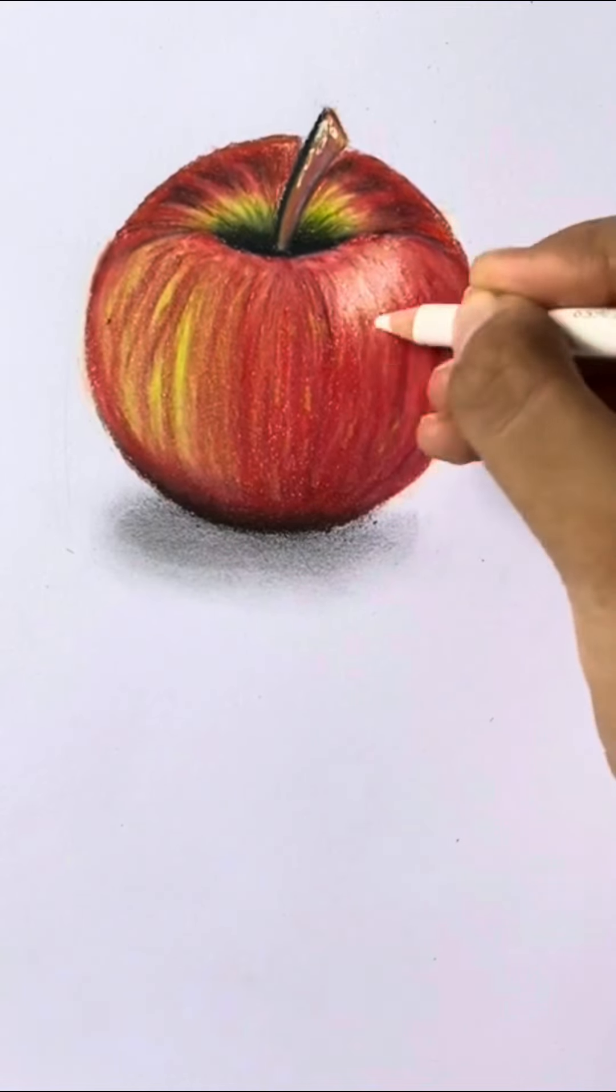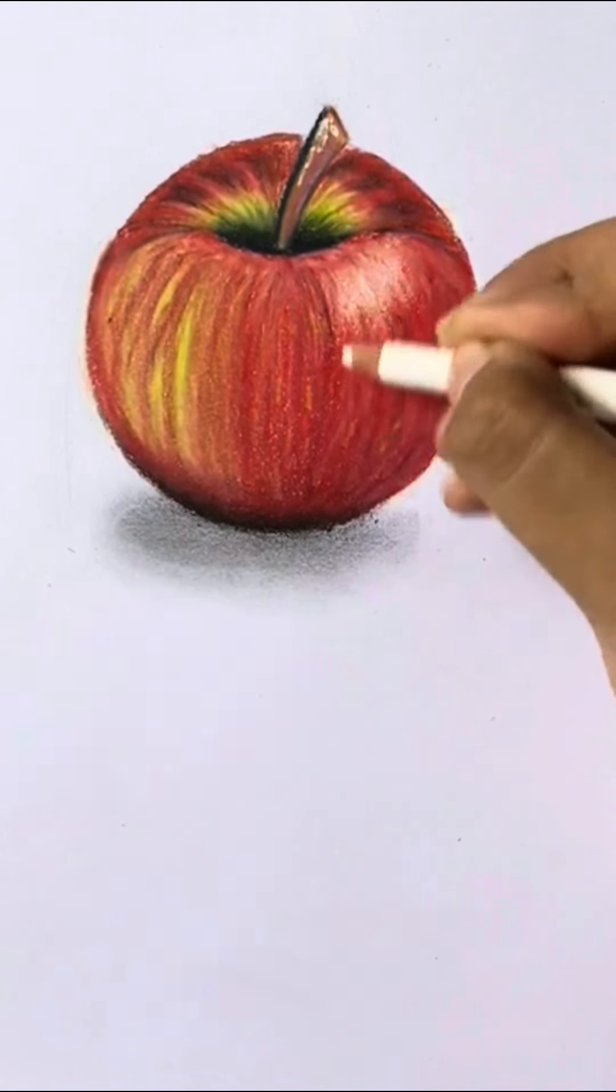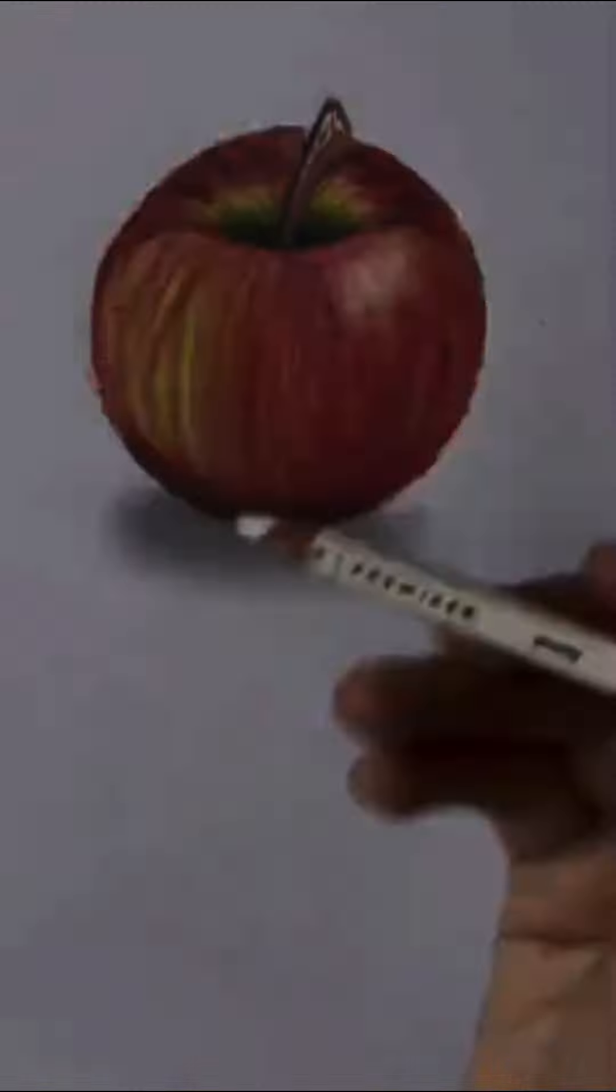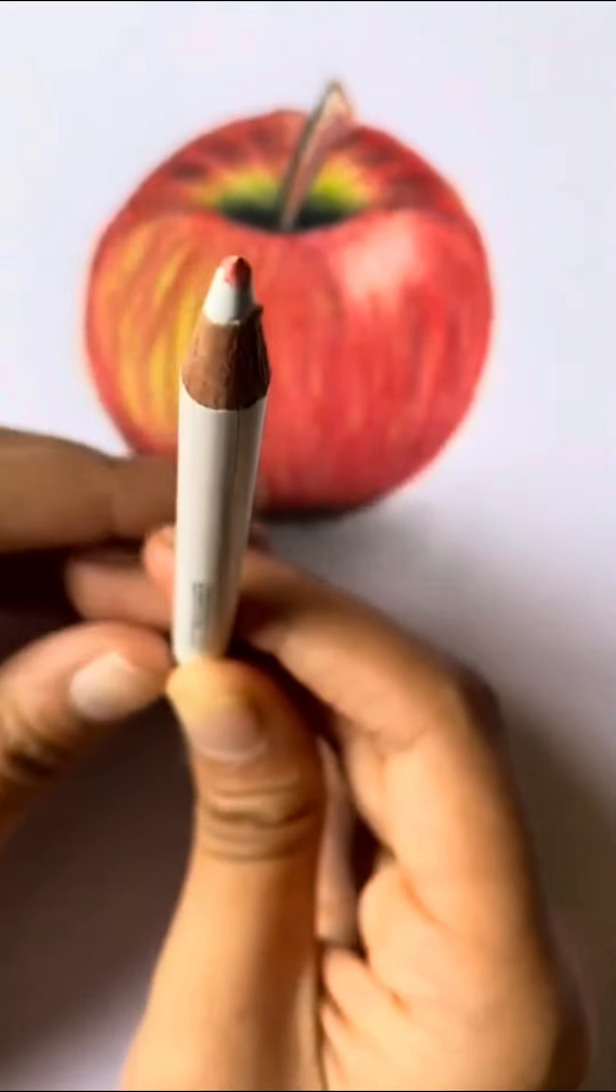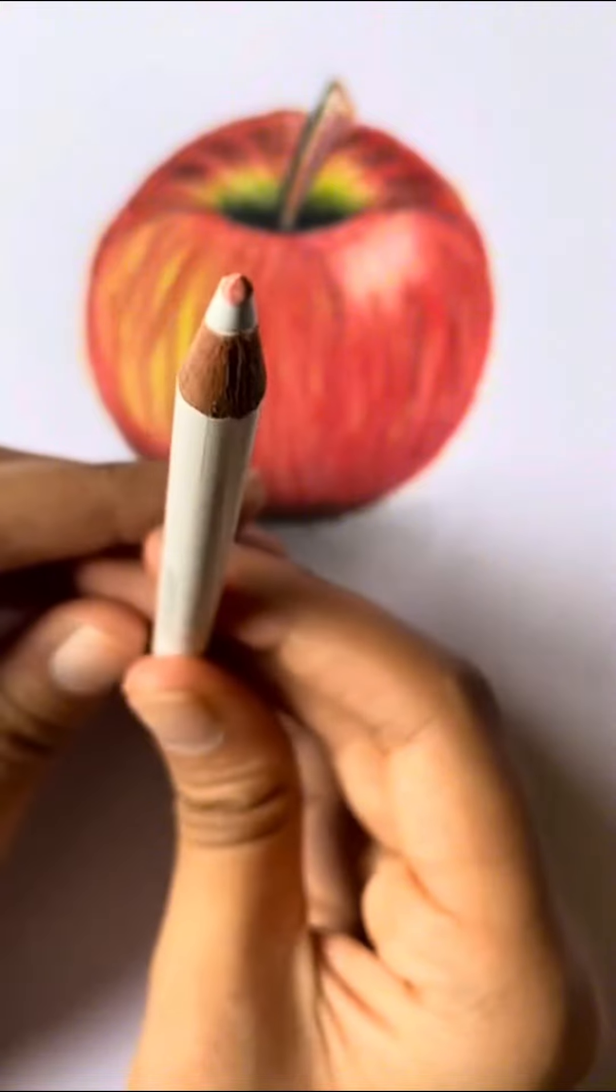Welcome to the series of color pencil hacks! Has it ever happened that you're using white to blend a darker color, and all the color just transfers to your white, ruining the white and also any other drawing you apply it next to?